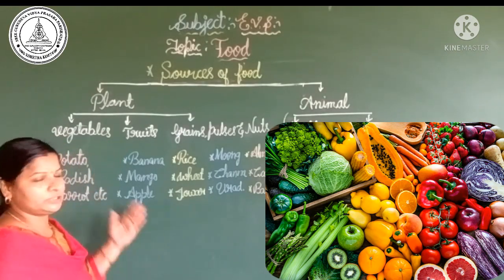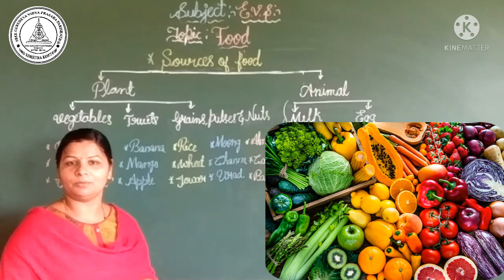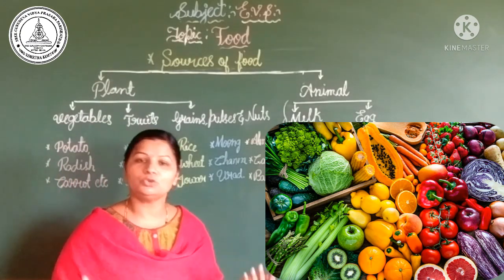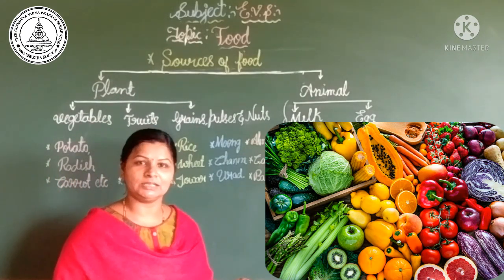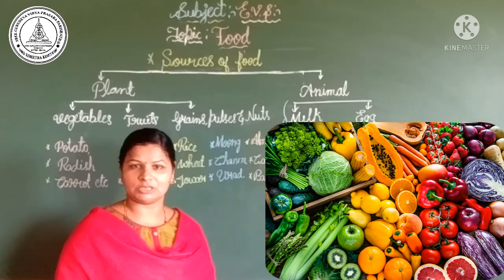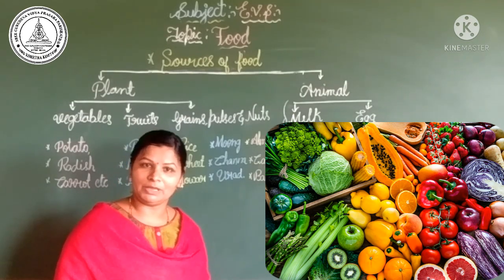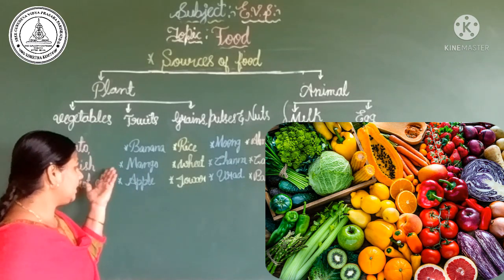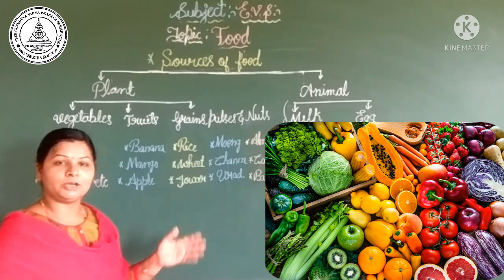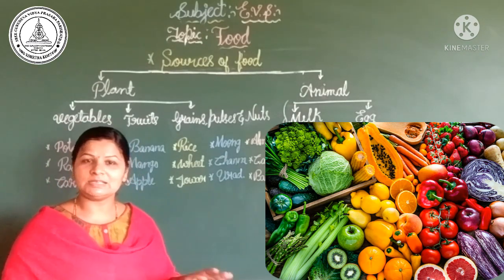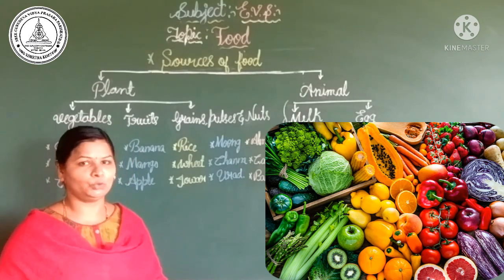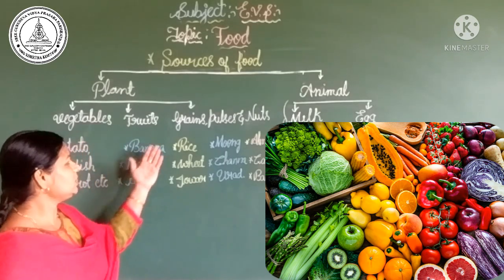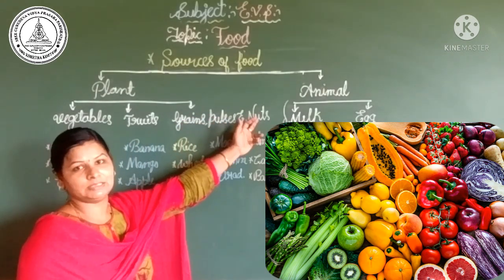Next, fruits — you have already learnt about fruits. What fruits are there? There are many types of fruits: watermelon, muskmelon, banana, mango, apple, orange. These are the fruits we get from plants. Next is grains, pulses and nuts. Grains — in Kannada, kaadagadu — include rice, wheat, jawar. Jawar means joda. These are examples of grains.